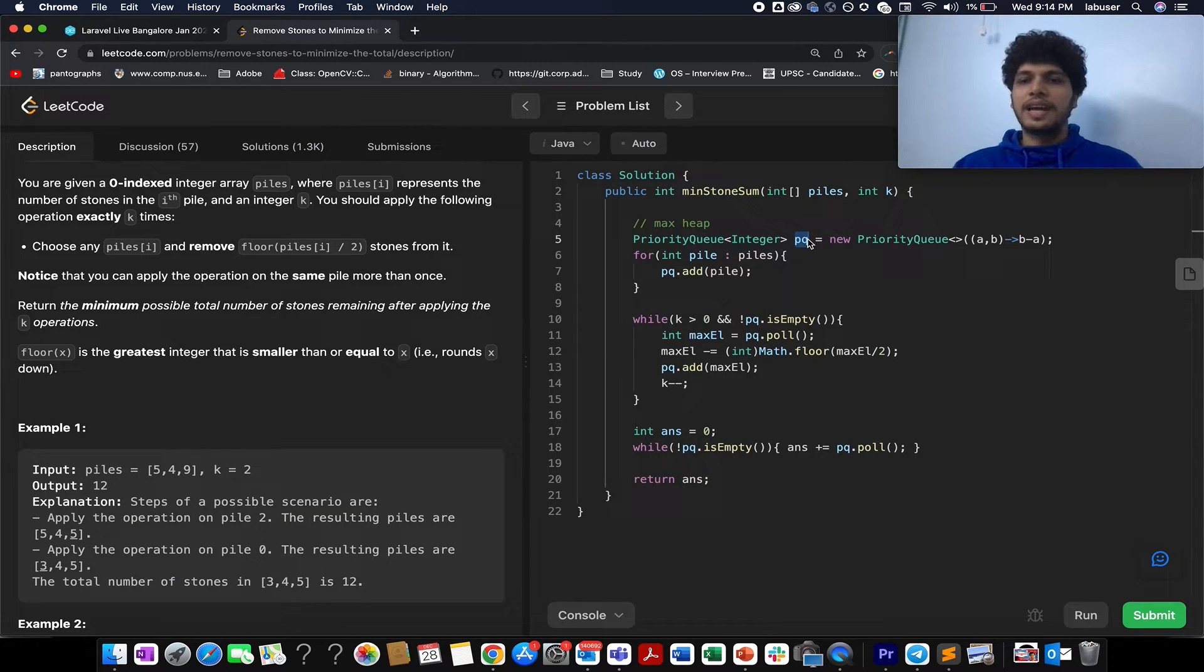In the first go what I have done? I have defined a max heap and remember while defining the comparator for defining max heap it will be b minus a. For min heap it is a minus b. Moving ahead I have added all the elements that are part of the piles array into the max heap and what I am going to do next while my k is greater than 0 that means I haven't consumed all the k operations and my heap is not empty. I pull out the maximum element from the heap. It will be automatically handled by the pole method. That's the property of the heap and I update the element with max element minus floor value of max element by 2. Once I have the updated value, I add this element back into the heap.